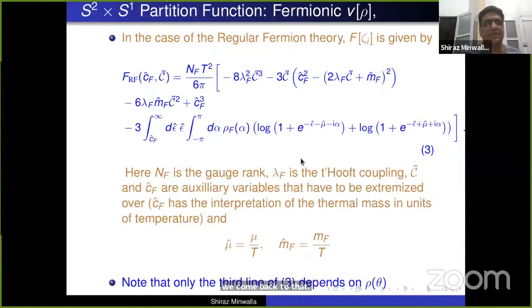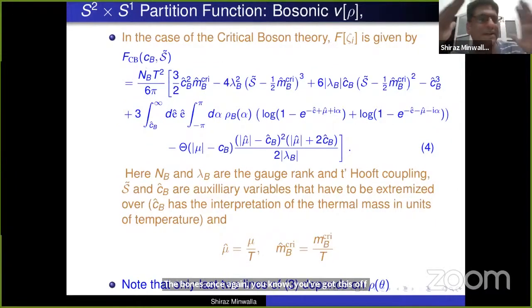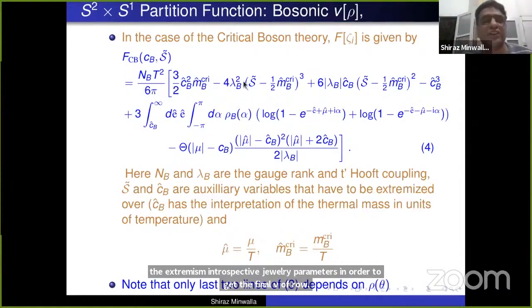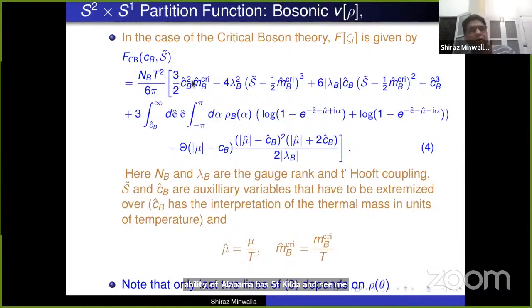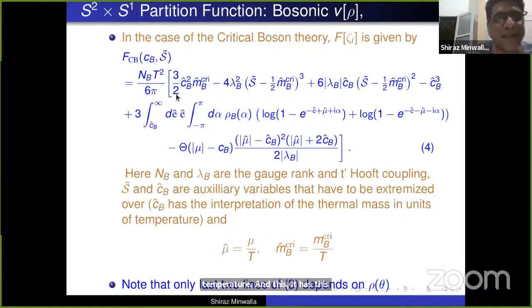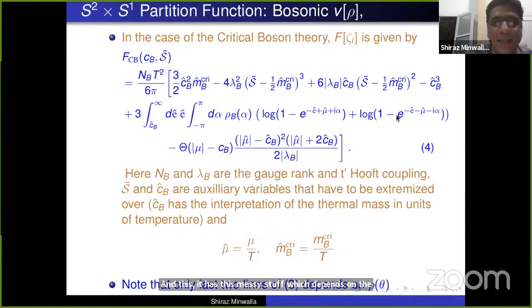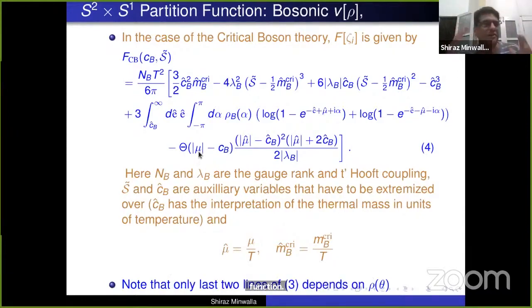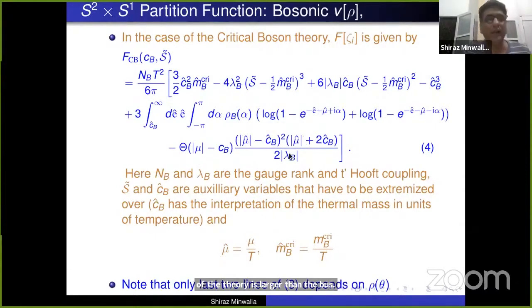For the bosons, similarly, the off-shell free energy depends on auxiliary parameters S̃ and C̃_B, where C̃_B is the thermal mass in units of temperature. It has messy contact-interaction terms that depend on theory details and are not universal. Then there is a part that looks like a one-loop partition function, and an additional strange piece involving a theta function that kicks in only when the chemical potential of the theory is larger than the mass.